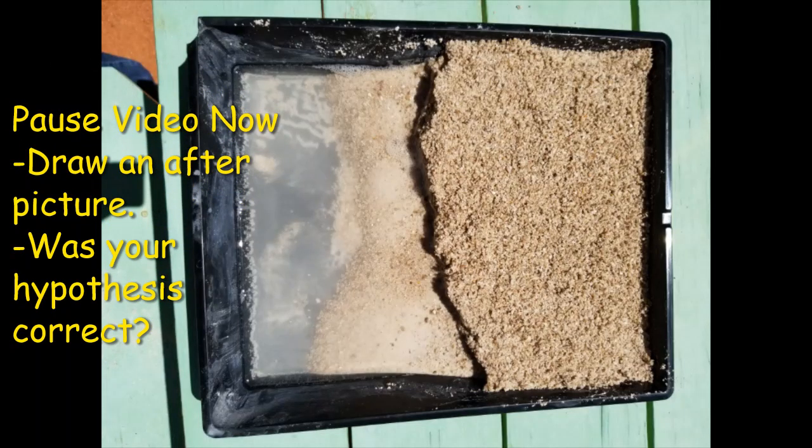Now that we've run our model, we can observe all the changes that happened to our landscape. I waited a few minutes before taking this picture so that you could see what it looked like with clear water. I wanted all of that sand to settle out of the water so that you could have the best view. At this time, I want you to pause your video and draw an after picture. When you're done drawing the after picture, compare it to your before picture. How has the landscape changed since we ran our model? At that point, I want you to review the hypothesis you wrote. Was your hypothesis correct? Did the model change the landscape the way you expected it? Or were you surprised by some of the changes you observed?